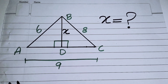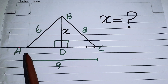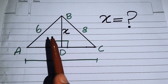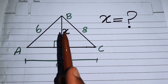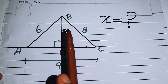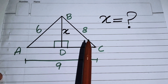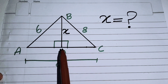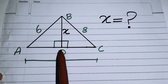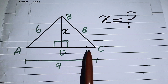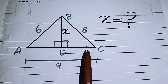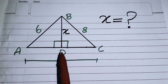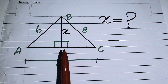Hello everyone. Here we have a right triangle ABC in which the length of side AB is 6 centimeters and the length of side BC is 8 centimeters. Point D is the midpoint of AC, and we need to find the length of the median BD, which is denoted by x.